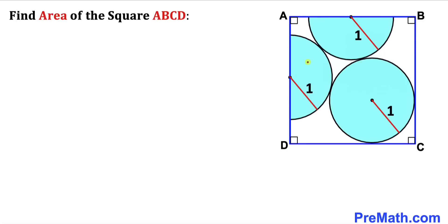Welcome to pre-math. In this video we have a circle and two semicircles inscribed in a square ABCD, as you can see in this diagram, such that the radii for all these circles is 1. These circles are tangent to each other and we are going to find the area of square ABCD.